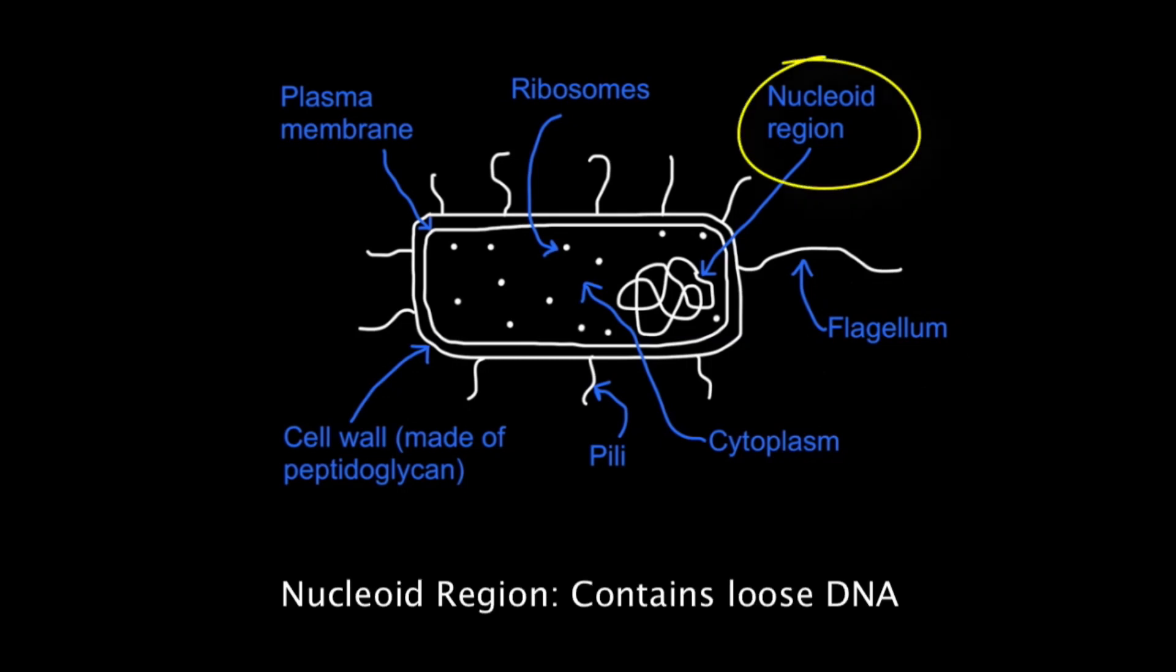The prokaryote has a nucleoid region which contains loose DNA which is not surrounded by a membrane. So it's not the nucleus, it's a nucleoid region.